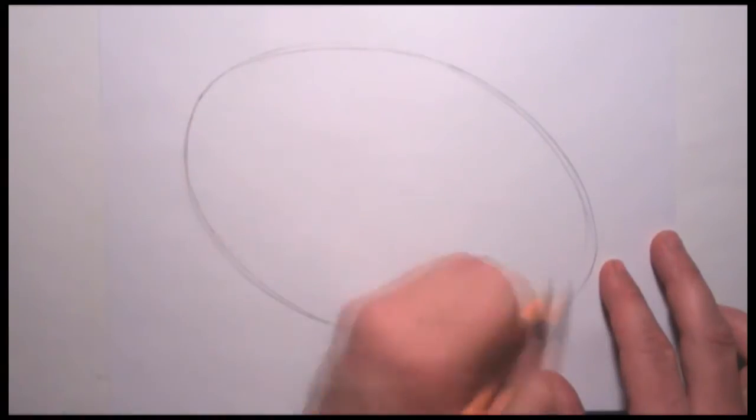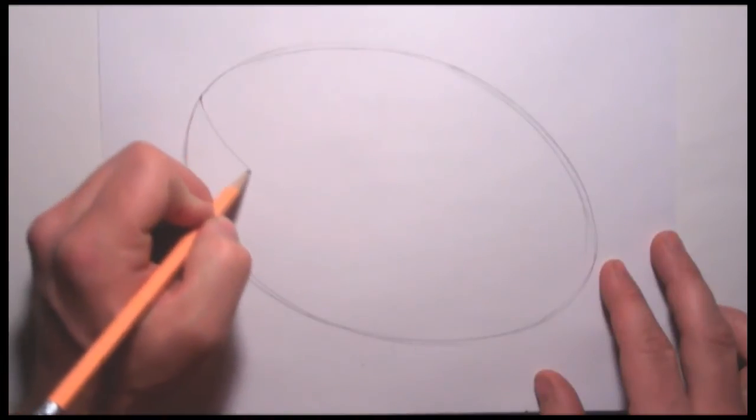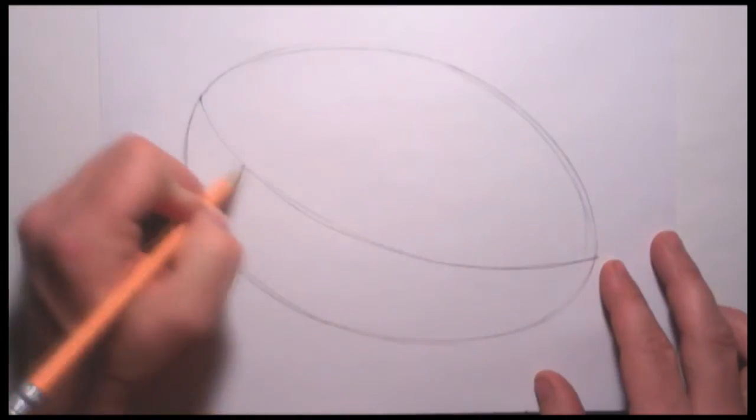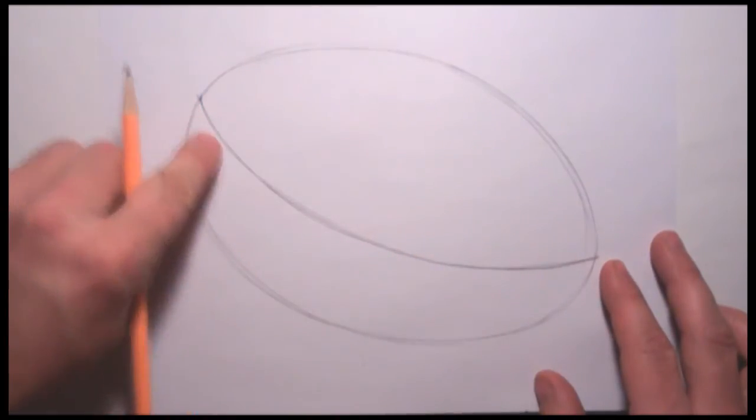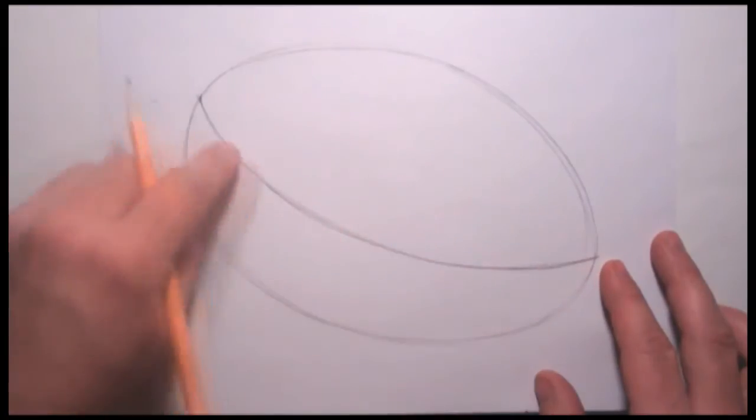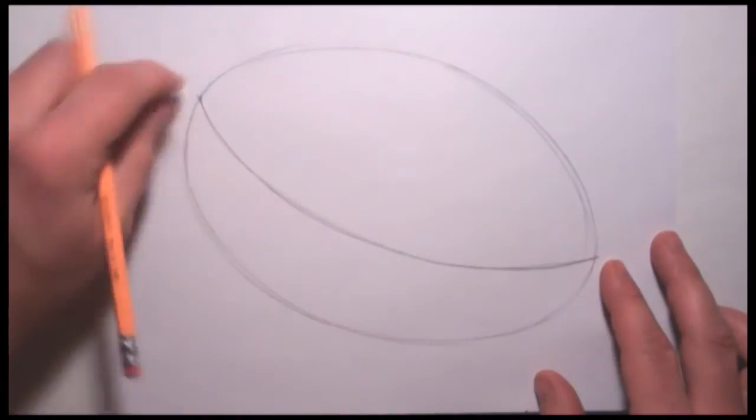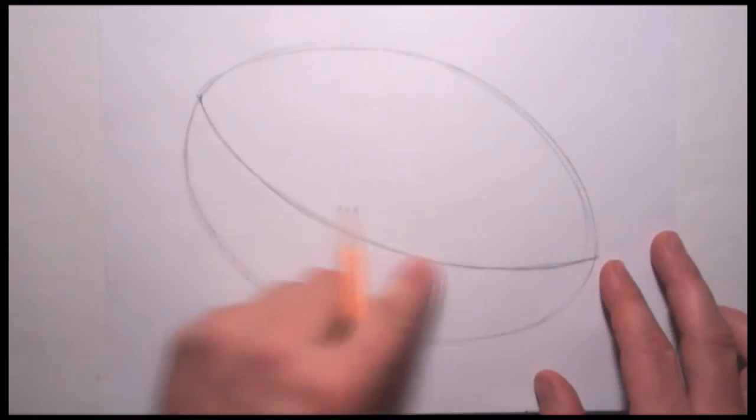Next we're going to divide it in half. Now we want to make sure that we actually take a line that we're going to draw and curve it. If you notice this line is curved, it creates form. It's actually a contour line to show us the form of this football. You can see how it curves.